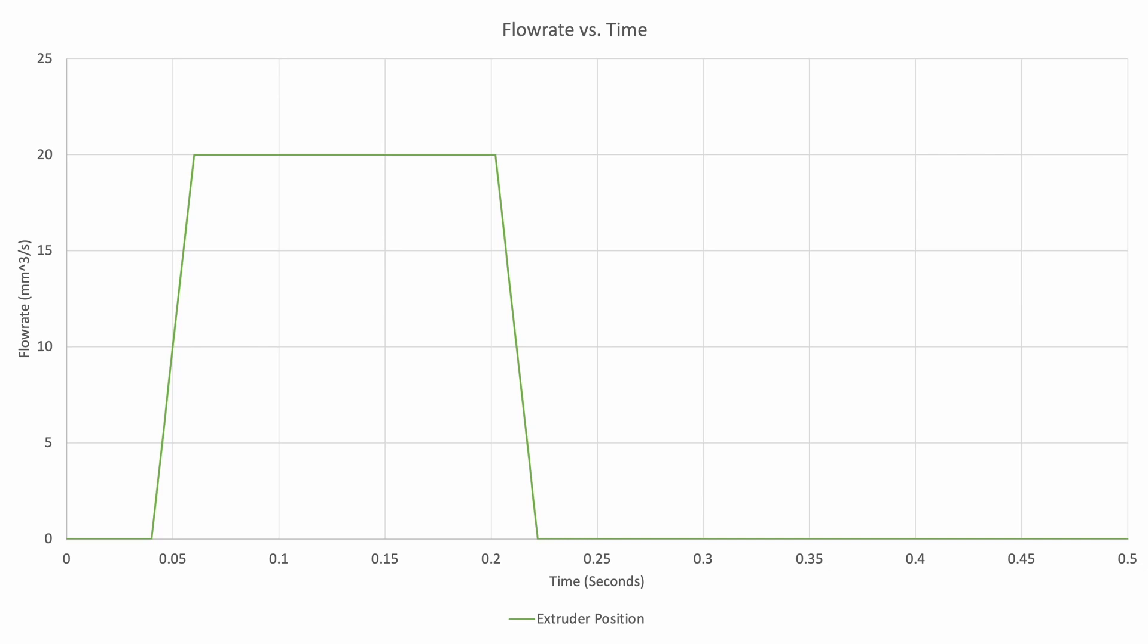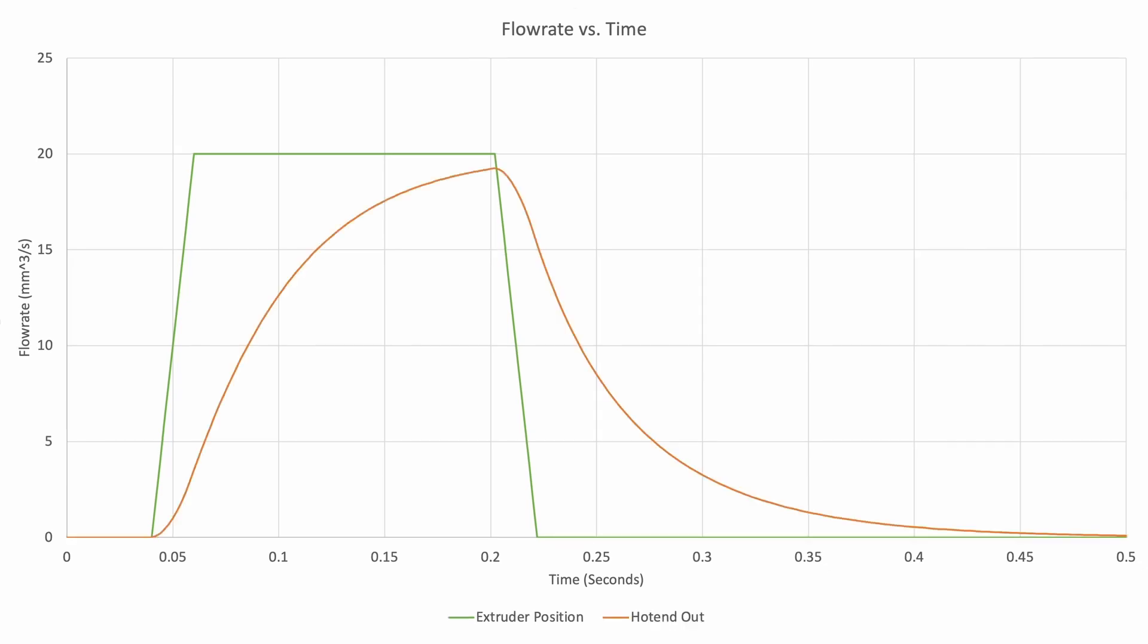Now we know that's not going to be the case though, so if we add on the same calculations from the last example but without any pressure advance, we see that during the initial part of this extrude move we're dramatically under-extruding all the way here—we don't have as high of a flow rate as we need, and actually significantly so.